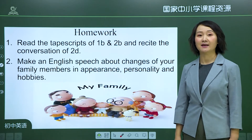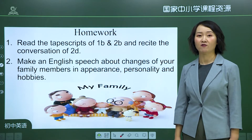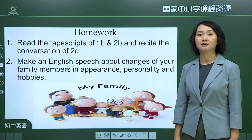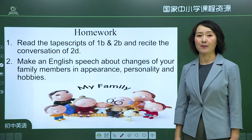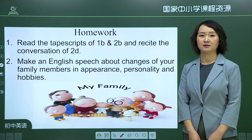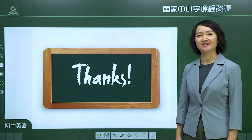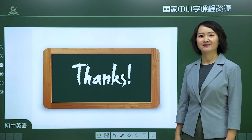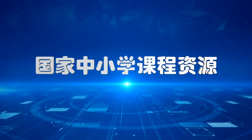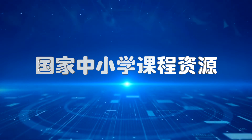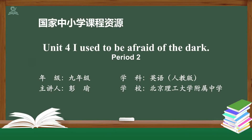Homework for today: Read the text scripts of 1B and 2B and recite the conversation of 2D. Make an English speech about the changes of your family members in appearance, personality, and hobbies. That's all for today, goodbye students.